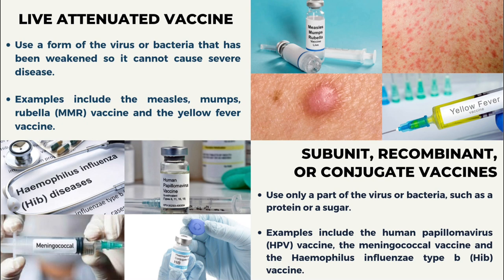Examples of live attenuated vaccines include the measles, mumps, rubella (MMR) vaccine and the yellow fever vaccine. The next type is subunit, recombinant, or conjugate vaccines, which use only a part of the pathogen such as a protein or sugar. Examples include the human papillomavirus vaccine, meningococcal vaccine, and many more.